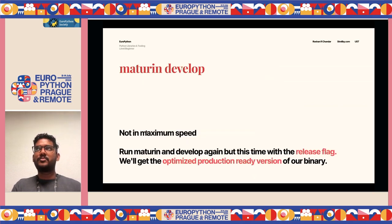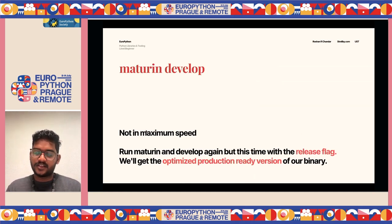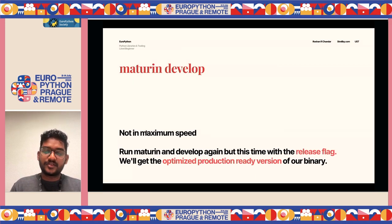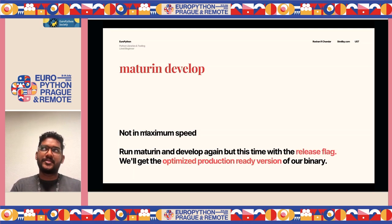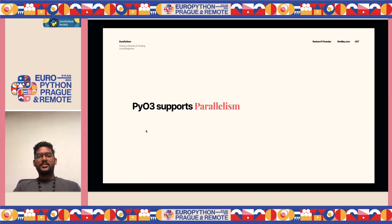One thing to note: `maturin develop` is not at maximum speed — it's a debug build, which is common for compiled languages. When it's time to release, you run `maturin develop` with the `--release` flag, and you get the optimized production-ready binary with all optimizations.